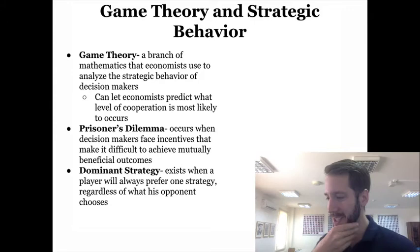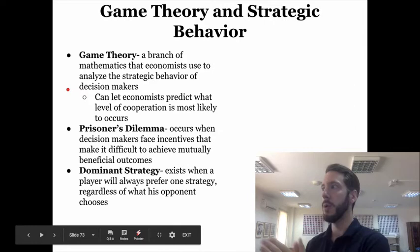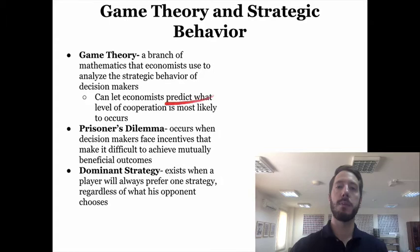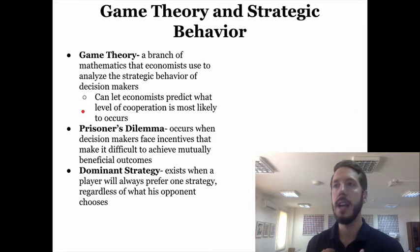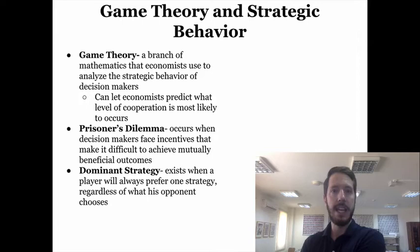Game theory is a branch of mathematics that economists use to analyze the strategic behavior of decision makers. It's difficult to analyze the decisions that people who run firms make in a purely humanistic sense, so a mathematical approach is better. This allows economists to predict what level of cooperation is most likely to occur. If I am the owner of a cell phone company like Zain, I have to predict what the other firms in the oligopoly are going to do and how I'm going to respond to that.